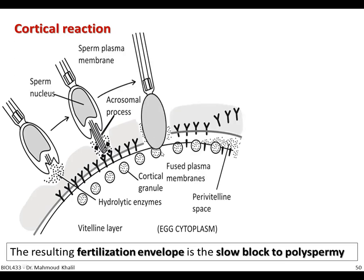Soon after, there is fusion between the egg plasma membrane and the head of the sperm. After this process occurs, there is a start of clipping or removing of the sperm receptor. This is a very important advantage to prevent subsequent binding of any other sperm to the egg cell membrane. The binding protein, shown here as black dots, binds to the receptor on the cell membrane, and after fusion of the sperm with the membrane, there is clipping of the receptors, which prevents subsequent binding of other sperms.